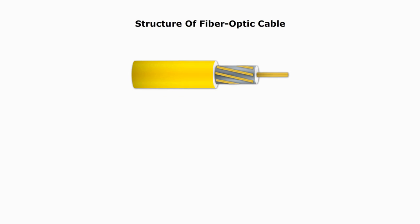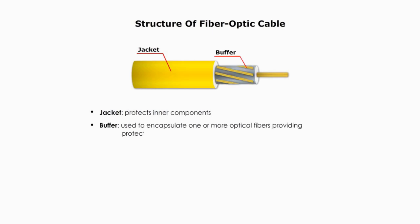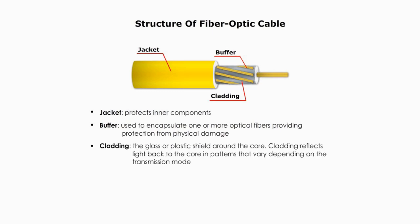Let's look at the structure of fiber optic cable. Fiber cable consists of a center glass core surrounded by several layers of protective materials. The outer layer is the jacket. The insulating jacket is made of Teflon or PVC. The second layer is the buffer, which is used to encapsulate one or more optical fibers and provide protection from physical damage. The layer around the fiber core is cladding. Cladding is made of glass or plastic.